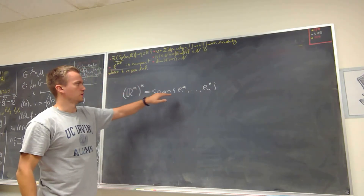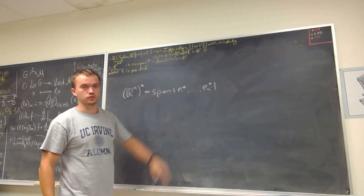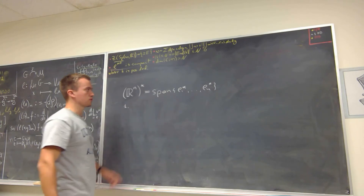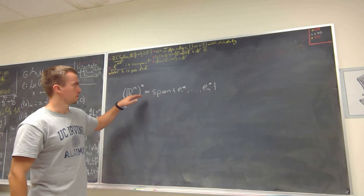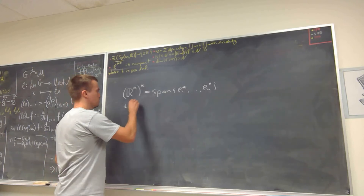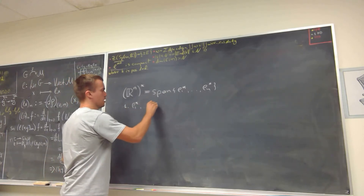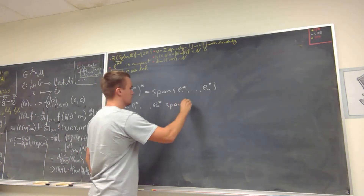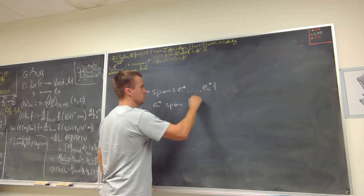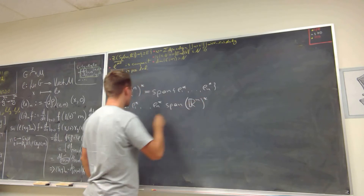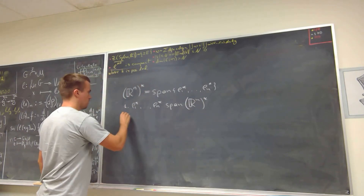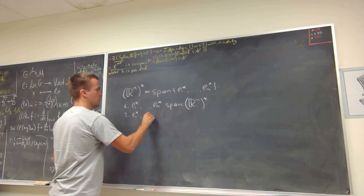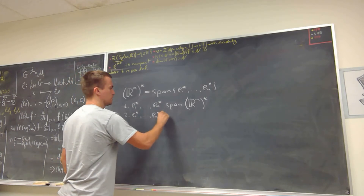To show that e1 dual up to en dual is a basis, I need to show two facts: first, that e1 dual through en dual spans R^n dual; and second, that e1 dual through en dual are linearly independent.